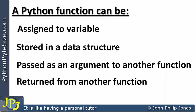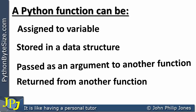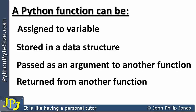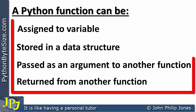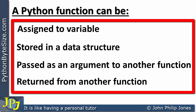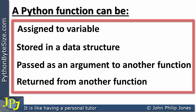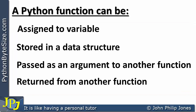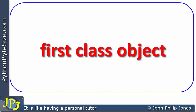So when we think of a Python function, a Python function can be assigned to a variable, stored in a data structure, passed as an argument to another function, or returned from another function. What I've shown in this video is just the first one — assigned to a variable. The other three I will come back to in future videos. These four facts about a Python function, together with the mechanism I've just described, means that when we think of a function in Python, we have to refer to the fact that a function is a first-class object.